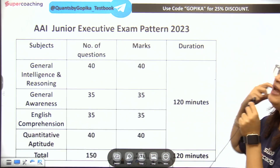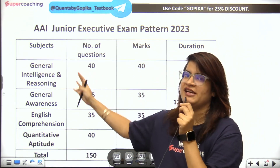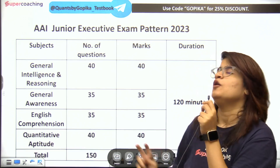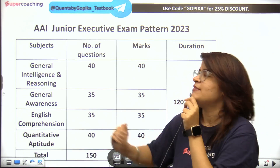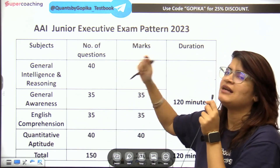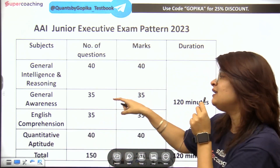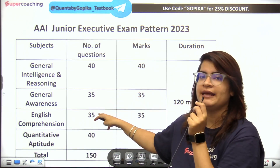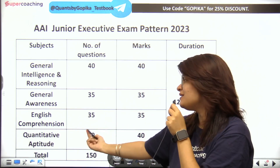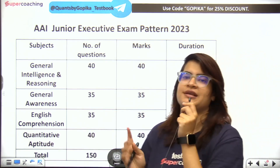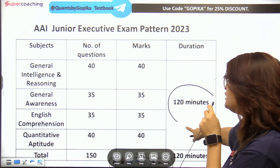Let us talk about the paper pattern. In this exam, you will see 4 sections with different categories and marks. Reasoning has 40 questions. General Awareness has 35 questions. English has 35 questions and Quants starts with 40 questions. This exam is 150 questions total, with 120 minutes of total time.